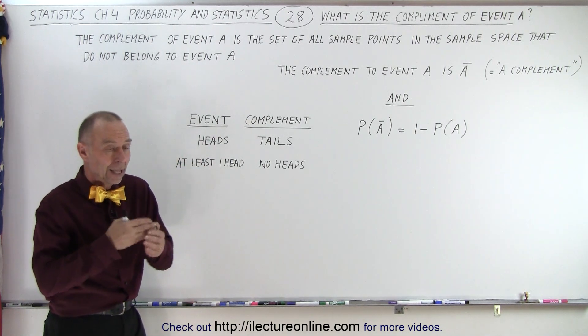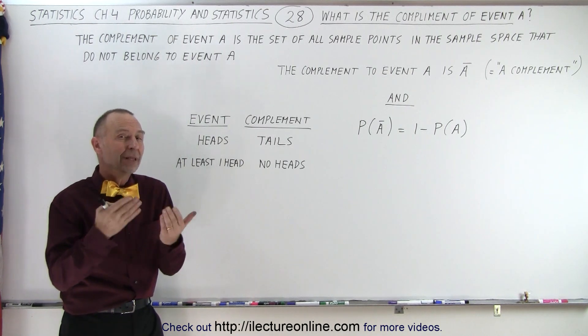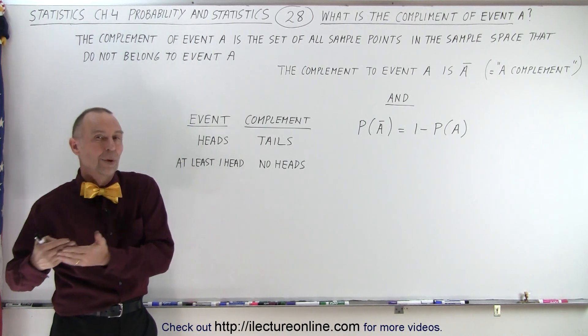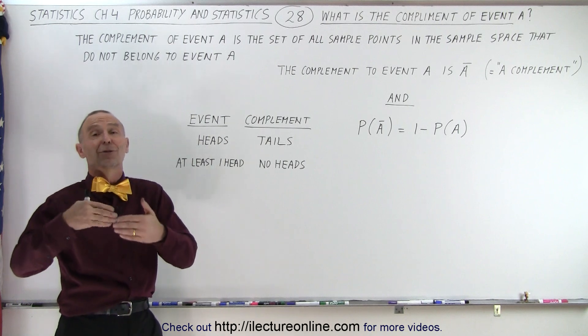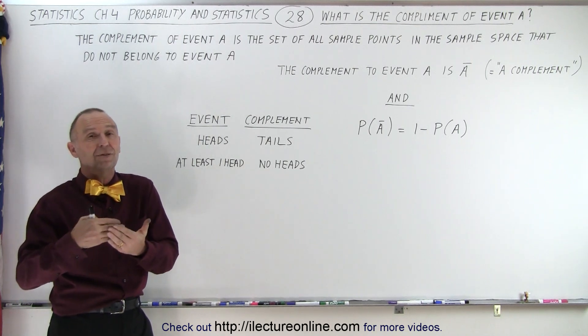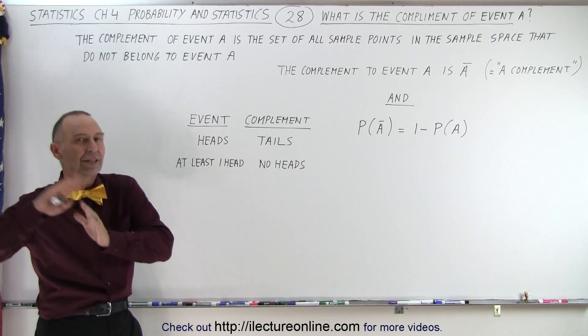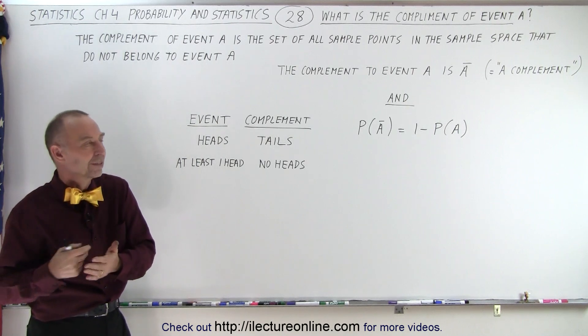So in this case, if we throw a coin and we're looking for the probability of not throwing heads, that means the probability of throwing everything else, which is the probability of throwing tails.